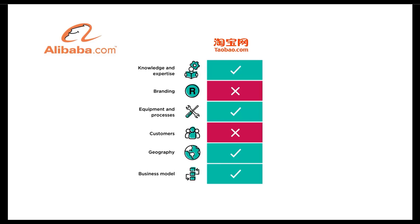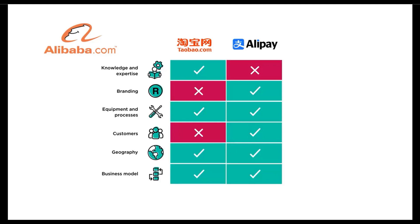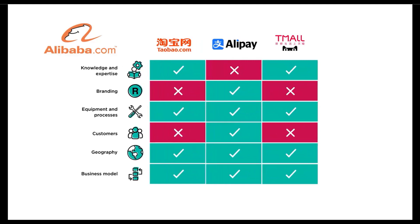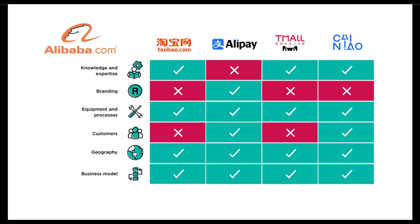Taobao was a different brand and served different customers, but it was based on the same basic expertise, equipment, processes, and business model. Later Alibaba would create Alipay, a mobile payments platform that partially leverages the same brand, serves many of the same customers, and has a similar business model. It uses some of the same platform management processes, though it also required some different, financial expertise. Alibaba also created a business to consumer (B2C) platform called Taobao Mall, later called Tmall, that again leveraged the same platform expertise and resources it had honed with Alibaba and Taobao.